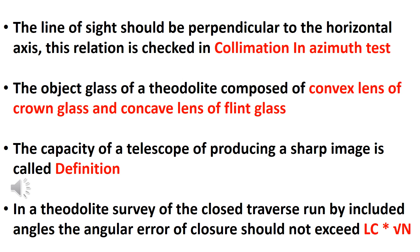Theodolite traverses are run using included angles. The angular error of closure should not exceed the least count of the instrument multiplied by the square root of n, where n is the number of stations.